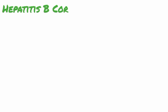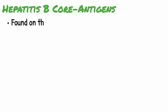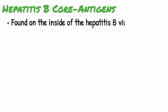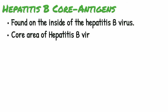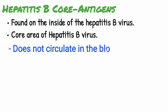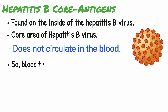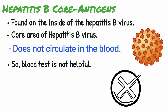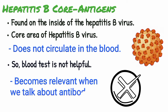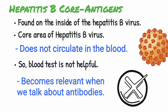Finally, we need to talk about the hepatitis B core antigen. This is found on the inside of the hepatitis B virus, on the core area. This antigen does not circulate in the blood, so it's not a helpful test on a blood test because it will be negative either way. However, it becomes relevant when we talk about antibodies, so next let's talk about the antibodies.